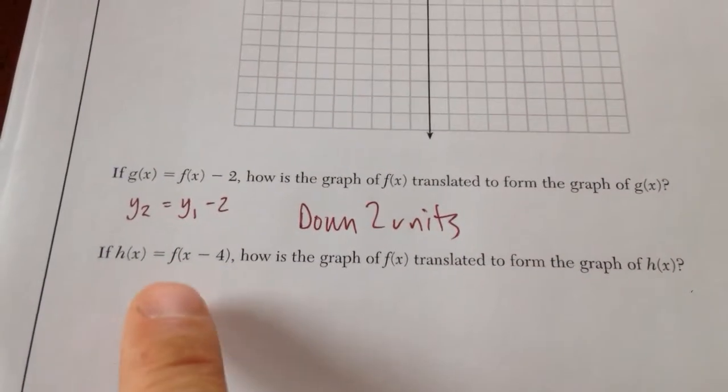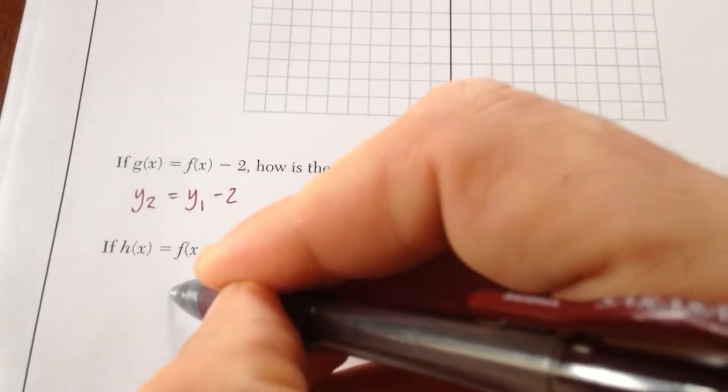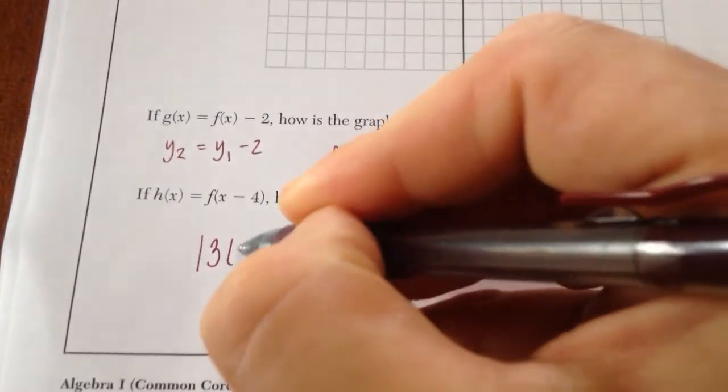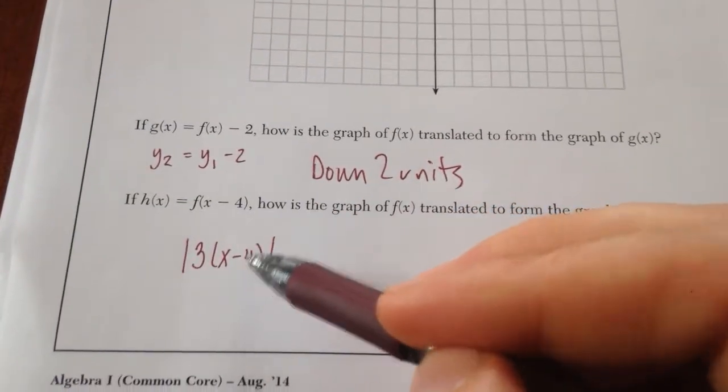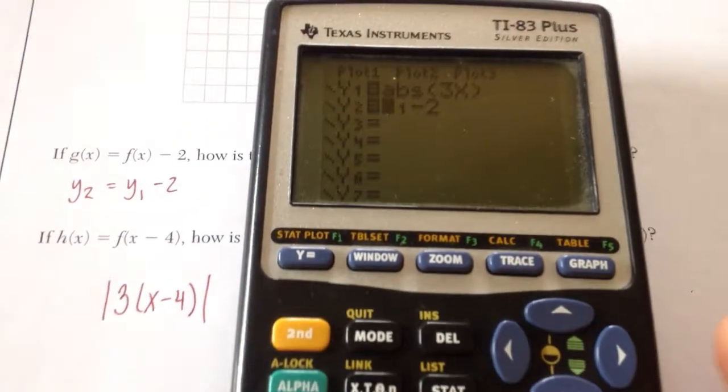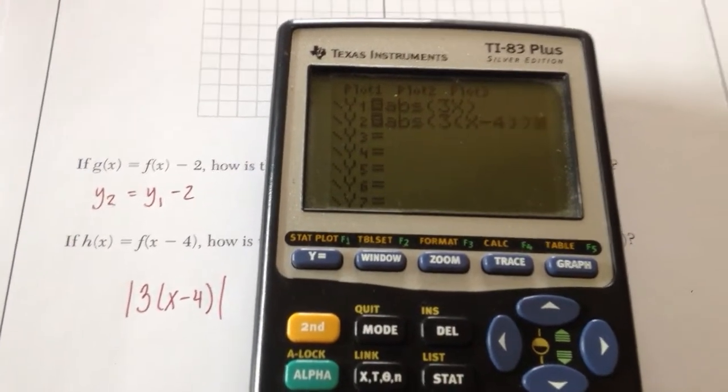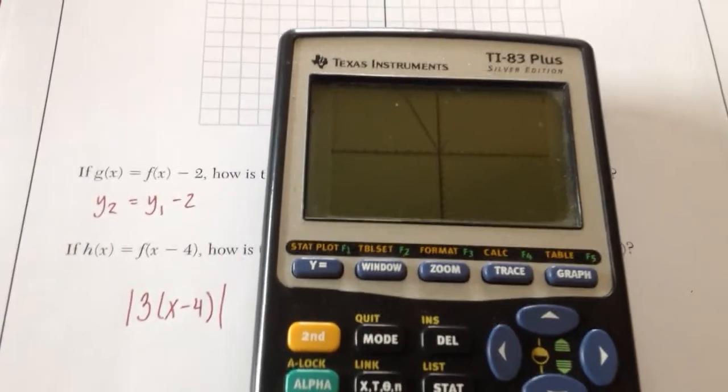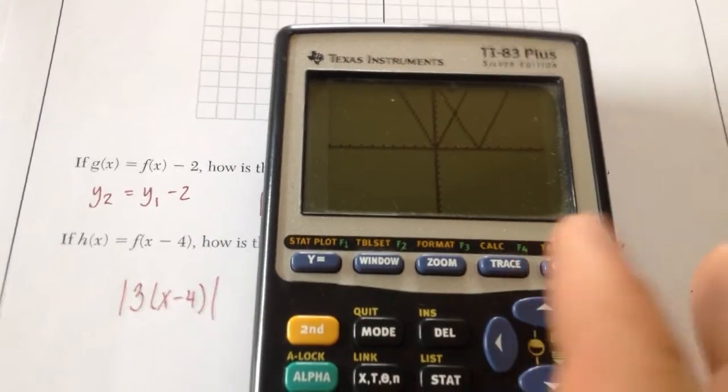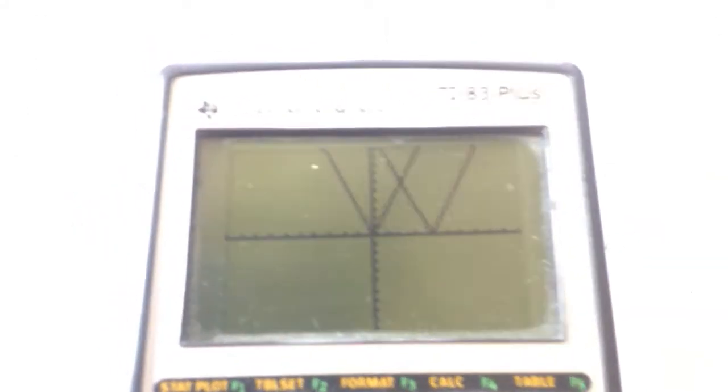Okay. Now in this case, this one is going to be a little bit more difficult to enter. Basically what this is saying is that the absolute value of 3 times x minus 4. The replacing x with x minus 4. So we can put that in our calculator and take a look at what happens, but you have to do that manually. Absolute value of 3 times x minus 4. Okay. Let's take a look at what happens. Notice how my graph moved to the right, 4 units.